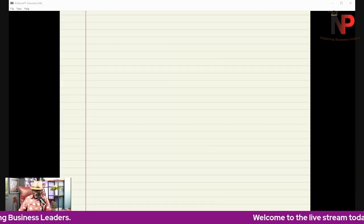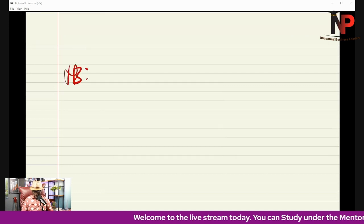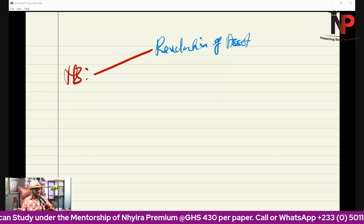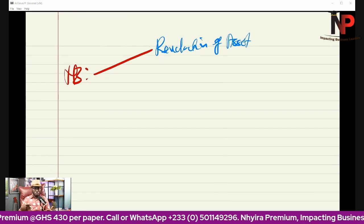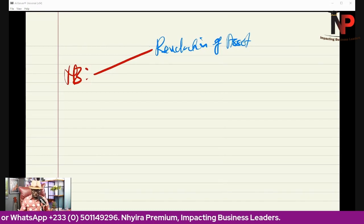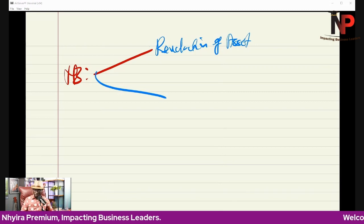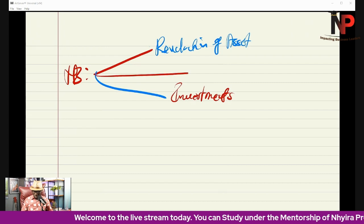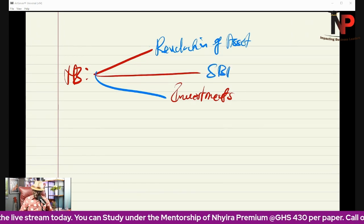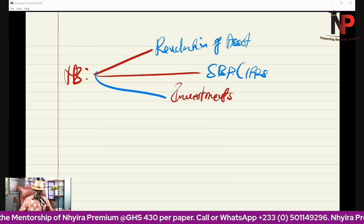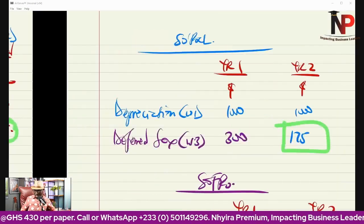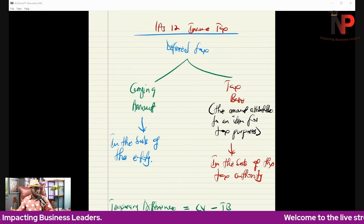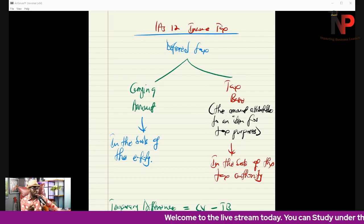Deferred tax has other implications. If you revalue assets and there is deferred tax, it is likely to be split between OCI and P&L — the amount going to OCI should be equivalent to the revaluation surplus based on the tax rate. Deferred tax can also arise from investment in associates, and when dealing with share-based payments under IFRS-2. But generally, we are comparing how the entity is carrying the item in its books to the tax base for tax purposes — that is the idea about deferred tax.